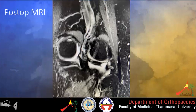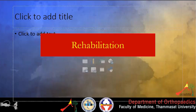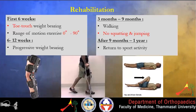We first pass the suture using a meniscal first pass device, then shuttle the gracilis through the meniscus root to reconstruct it. The post-op MRI showed good healing. For rehabilitation, for the first six weeks there will be toe-touch weight bearing and range of motion from 0 to 90 degrees. Progressive weight bearing starts from six weeks to twelve weeks. From three months onwards, the patient is walking but no squatting or jumping, and after nine months to one year they return to sports activity.